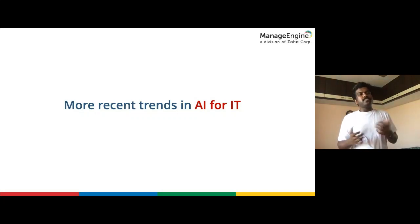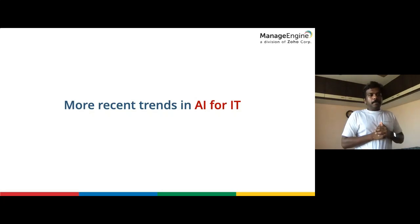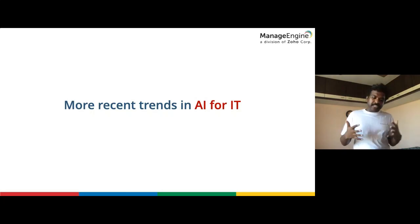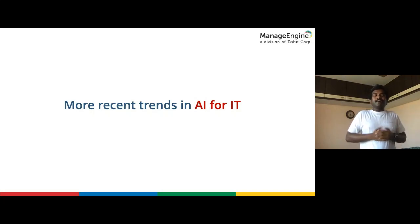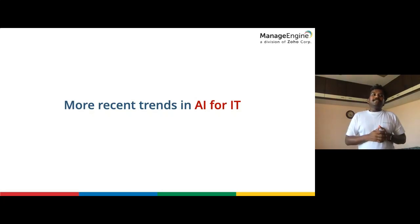I'm going to talk about more recent AI trends, especially closer to IT. When AI was initially developed in the consumer world, it was built on top of tons of data — search engines have click streams and you're tracked at a pixel level. But enterprise is a different ball game: there are stricter data compliance regulations, and a couple of wrong outage predictions will make people turn the system off. Things get a lot more serious when it comes to AI in IT.